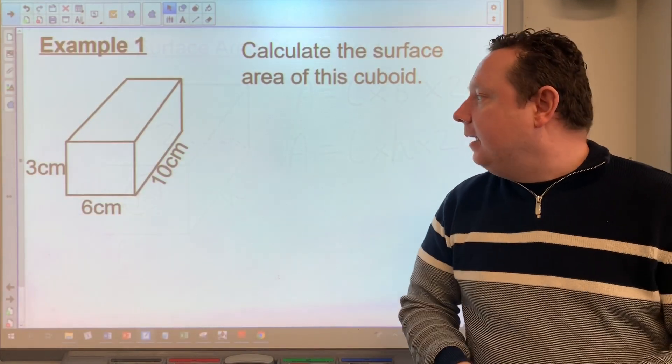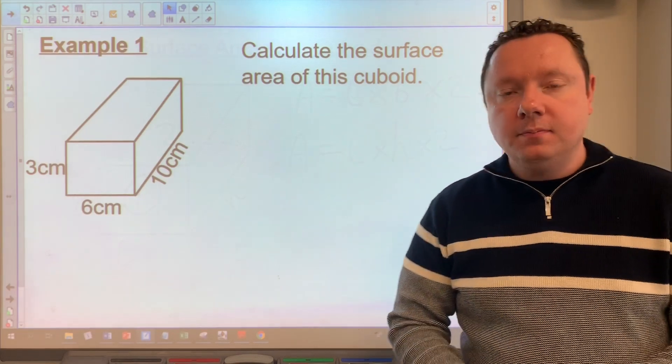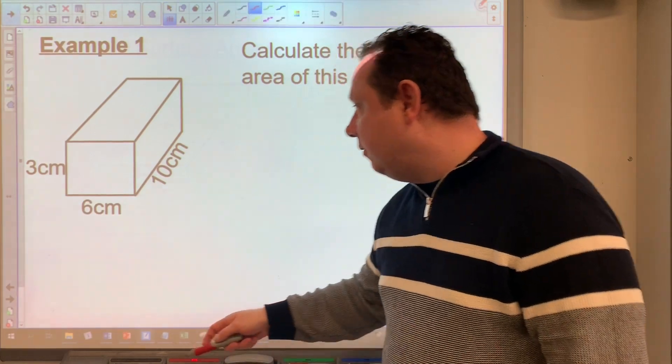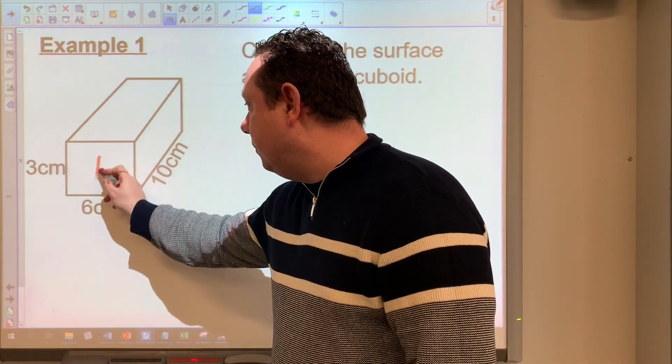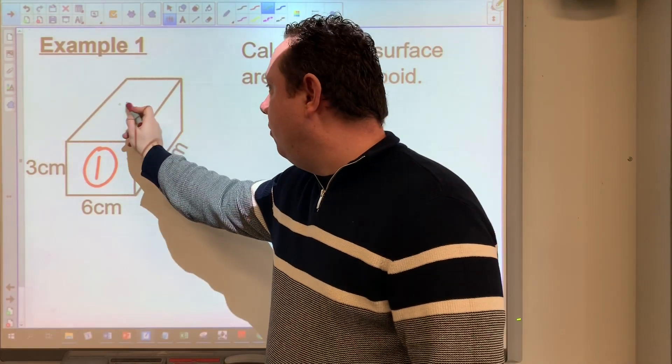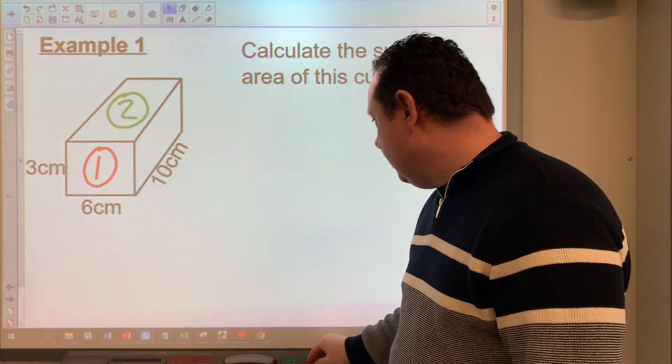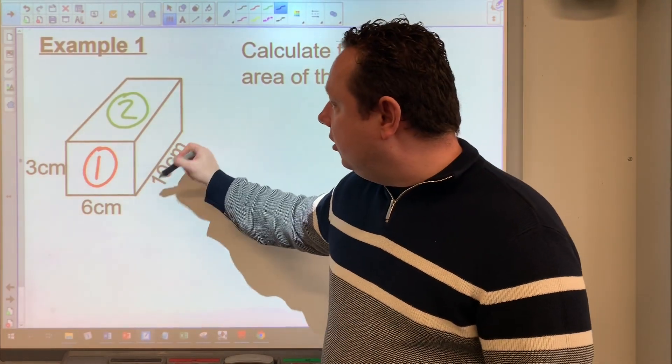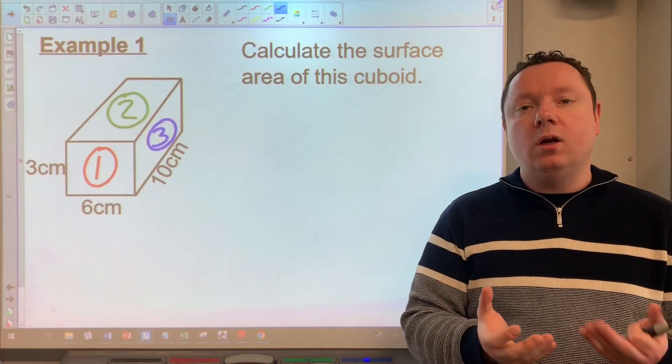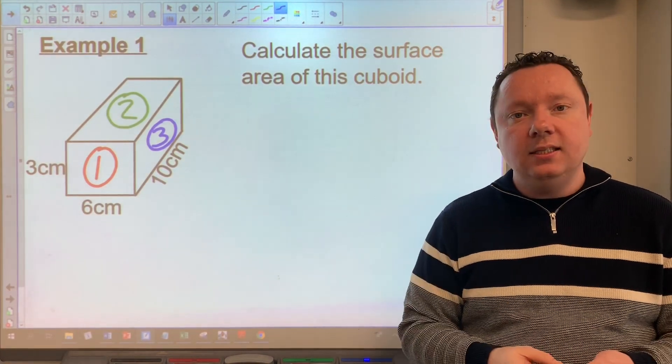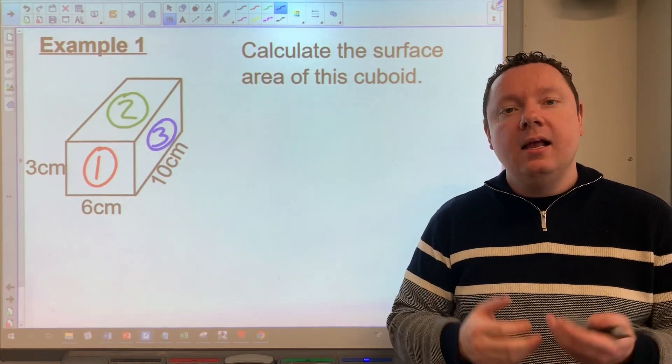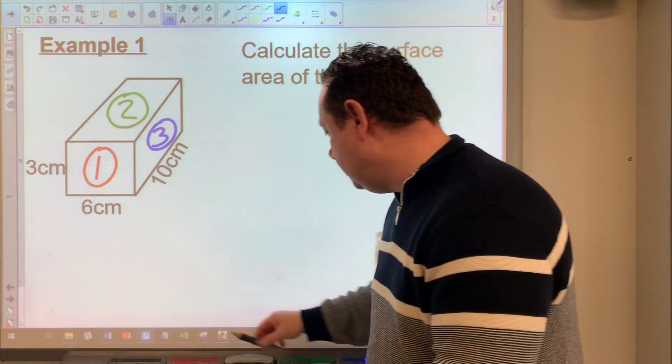Okay, example one says calculate the surface area of this cuboid. So step one is to identify the surfaces that I have. So using different colored pens, if I just label this one number one and then the green could be the top number two and the side here could be number three in blue. And all I need to do because I want the area of all the faces is work out the area of each of the individual faces. Remember to double it because there's two of each face. There's hidden ones at the back and then add them up. So I don't need to remember a formula. So let's just begin.